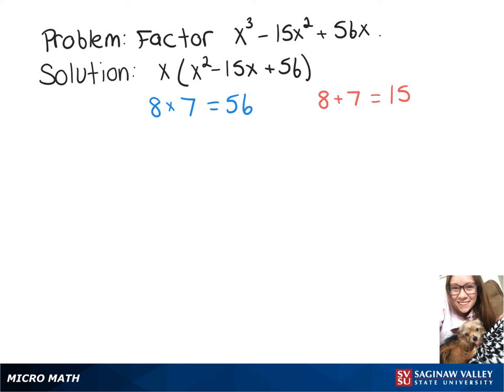These numbers don't work because we're looking for a negative 15 since that's our middle term. But negative 8 times negative 7 also gives positive 56, and when we add those numbers together, we do get negative 15.